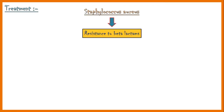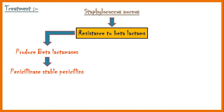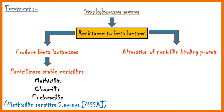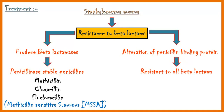Now let's discuss about the treatment of staph infections. Staphylococcus aureus shows resistance to beta-lactam antibiotics. Some of them produce beta-lactamases, which degrade the beta-lactam antibiotics. However, they are susceptible to penicillinase-stable penicillins like methicillin, cloxacillin, and flucloxacillin. These strains are known as methicillin-sensitive Staphylococcus aureus. Some staphylococcal strains possess an alteration in penicillin-binding protein, and they are resistant to all beta-lactam antibiotics and all types of penicillin antibiotics.